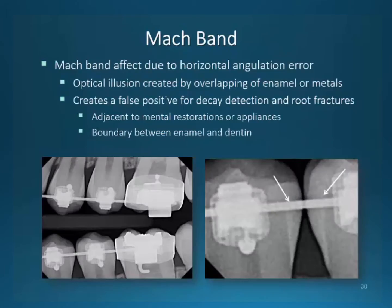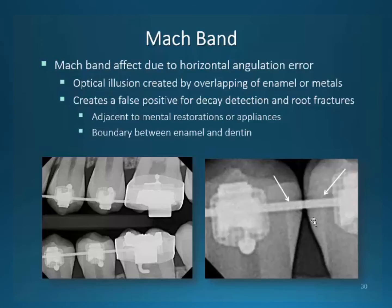Mock band is an interesting concept. It plays in the realm of optical illusions and radiographs. It is due to horizontal angulation errors created by overlapping of images with the enamel and the metal of an orthodontic appliance in reaction to the natural teeth structure. The overlapping creates a false positive for decay detection and appears at the interproximal areas of teeth and where the orthodontic appliance intersects the enamel or coronal surface. The images clearly show the darkening around an arch wire and the illusion of decay, and the mock band effect on the interproximal areas almost gives the illusion that these teeth have decayed.